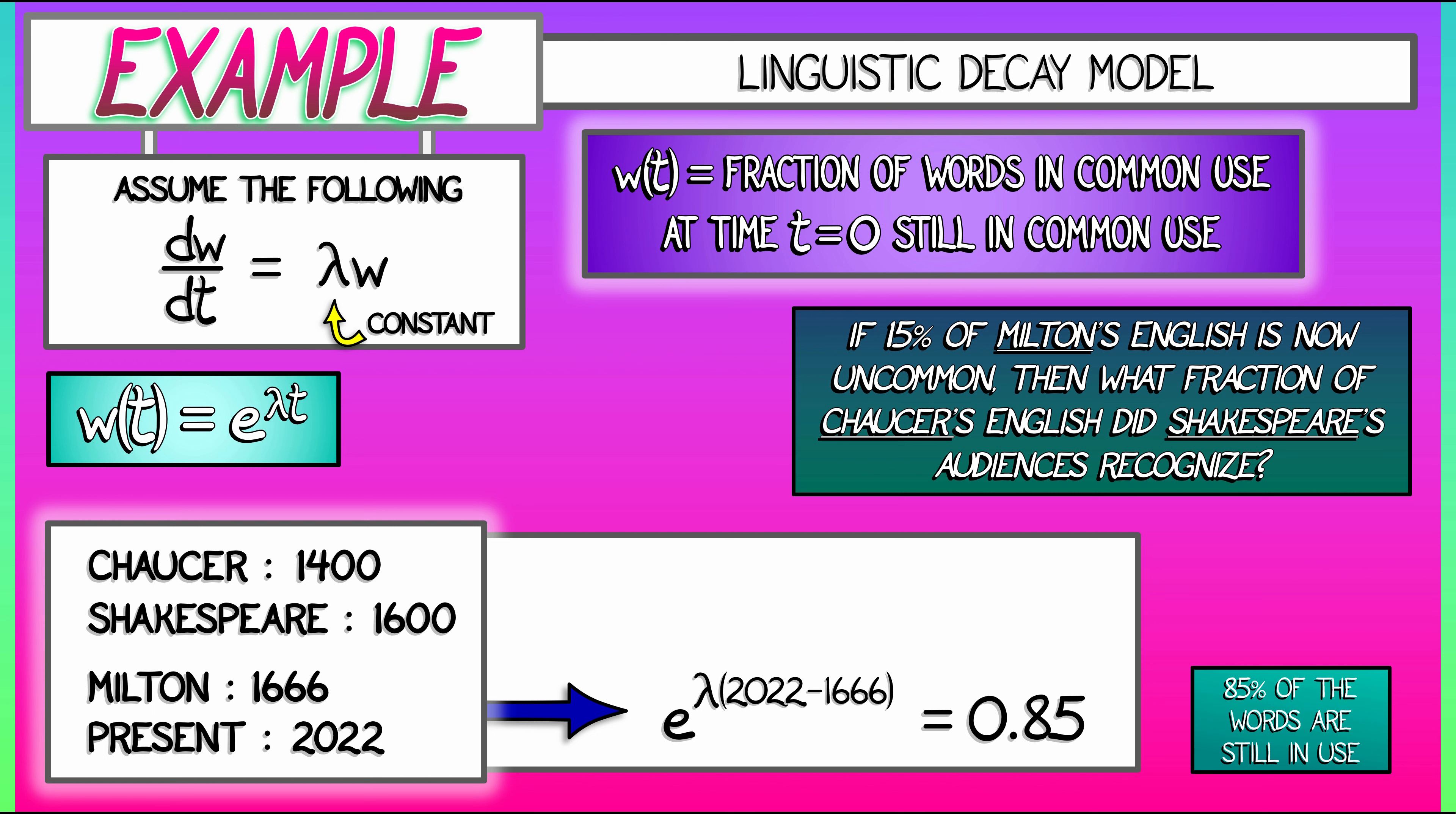That's an equation, one unknown, we can solve for lambda. Lambda comes out to be approximately negative 1.7 times 10 to the minus 4. If we know that, and if this lambda is constant over the evolution of a language like English, then what we can do is say,